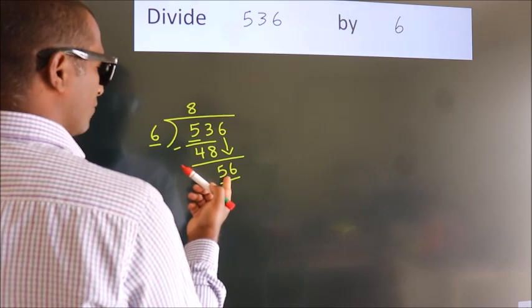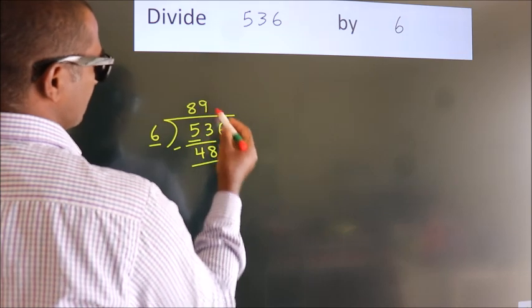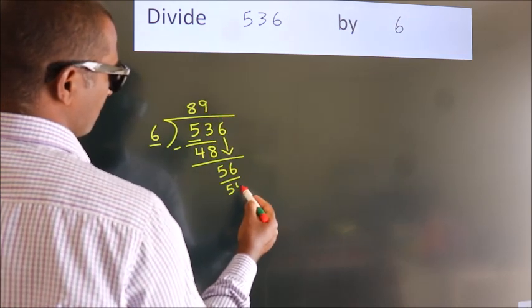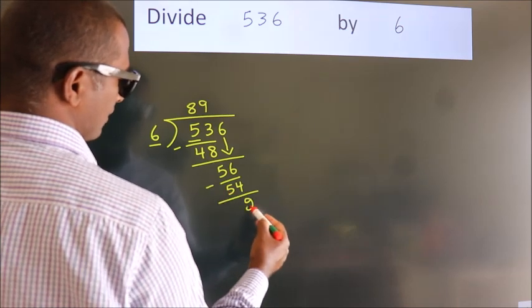A number close to 56 in the 6 table is 6 times 9, 54. Now we subtract. We get 2.